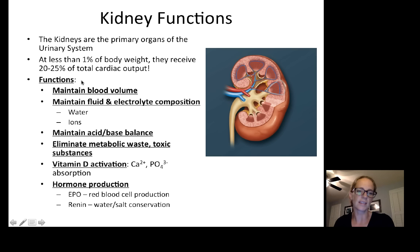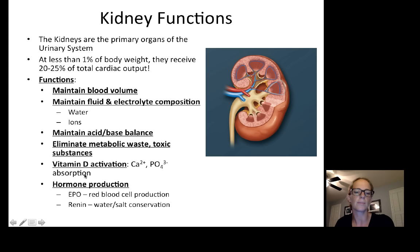The functions of the kidney include maintaining blood volume, maintaining fluid and electrolyte composition of the blood — that is balancing the water and the ions within the blood — maintaining acid-base balance, eliminating metabolic waste and other substances, activating vitamin D which helps with calcium and phosphate absorption in the small intestine, and production of certain hormones. The kidneys can produce EPO, which increases red blood cell production. They also produce renin, which is part of the renin-angiotensin-aldosterone system for water and salt conservation.